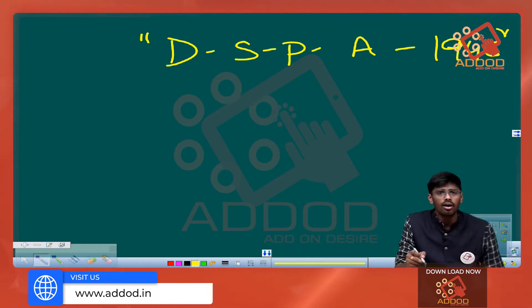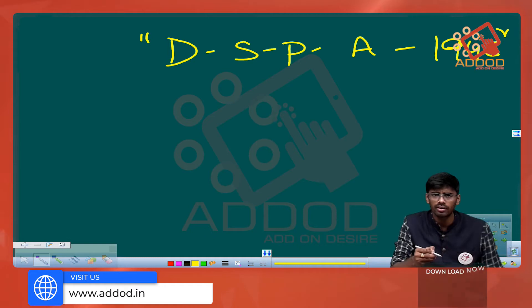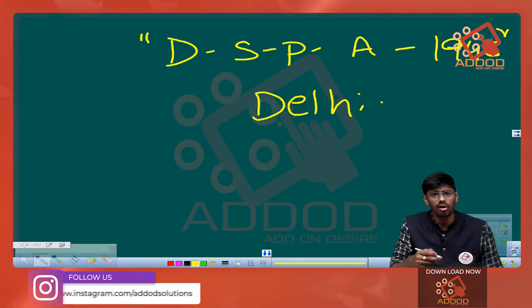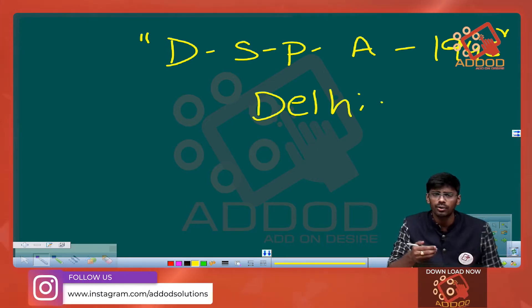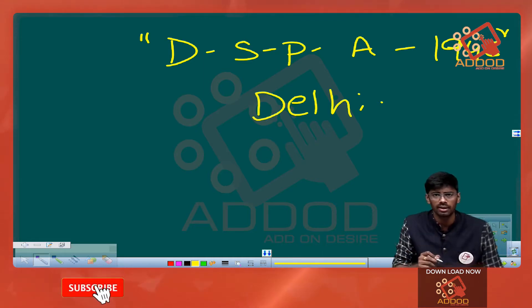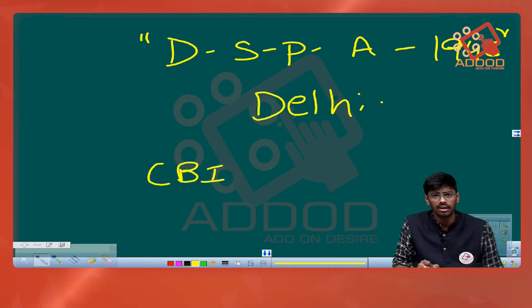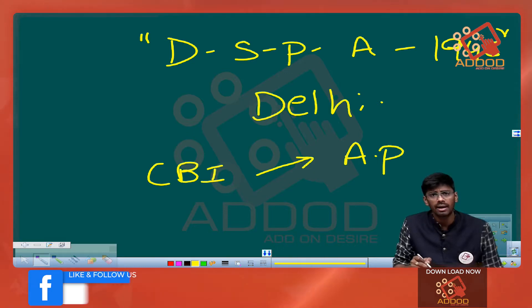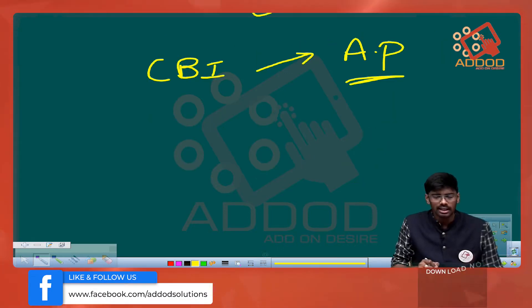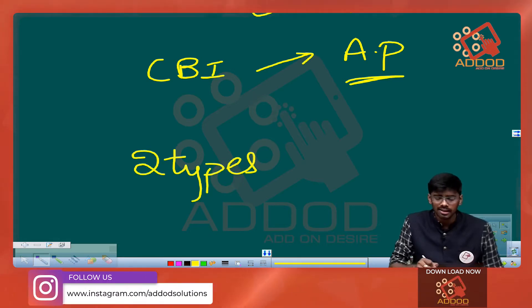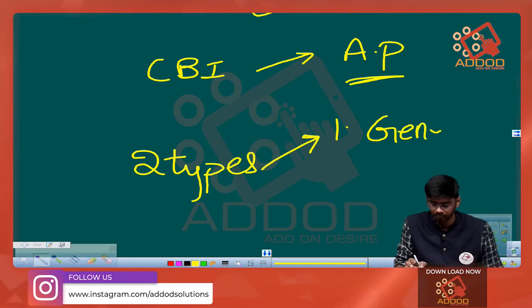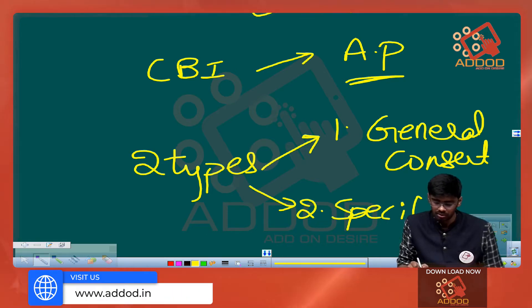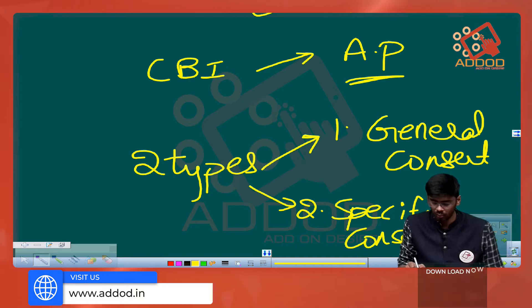The CBI's original jurisdiction is only in Delhi. If it wants to take up investigation cases in other states, it would have to take permission from the respective state government. For example, if the CBI wants to investigate in Andhra Pradesh, it requires permission from that state. There are two types of permissions: one is called general consent, and the other is called specific consent.